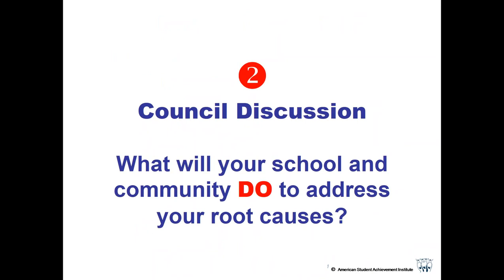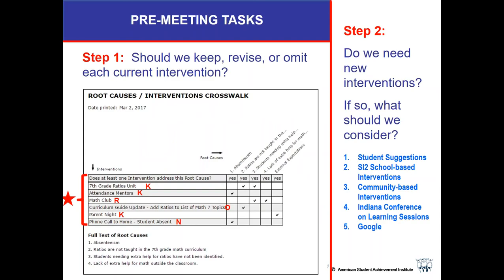Here's the discussion prompt. We want to know what your school and your community will do to address your root causes — interventions can happen in your community too. Your faith-based organization could do an intervention, your business could do an intervention, a service club could help. As a pre-meeting task, we asked you to print a copy of the root causes intervention crosswalk. Down the left side are all your interventions and across are the root causes. We asked you to put a letter next to each intervention: K to keep it, R to revise it, O to omit it, or N for not sure.